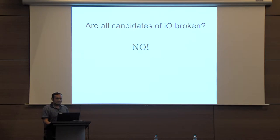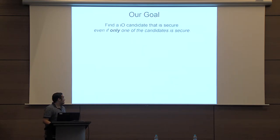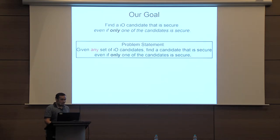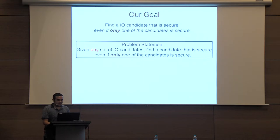The question that arises is: are all these IO candidates broken? The answer is no. We do believe we have several unbroken IO candidates which have proofs of security in restricted models. Our goal then becomes to find an IO candidate which is secure even if only one of these candidates is secure. More formally, given any arbitrary set of IO candidates, is it possible to find a candidate that is secure if at least one candidate is secure? This concept is called an IO combiner.